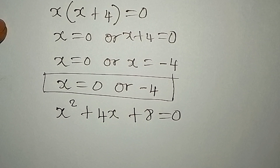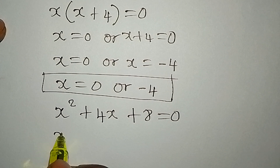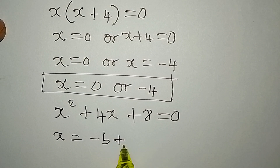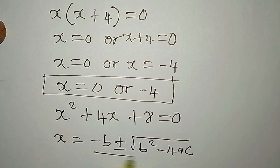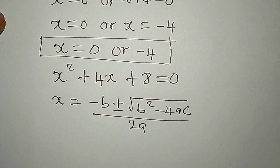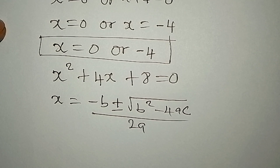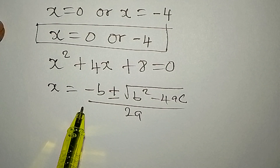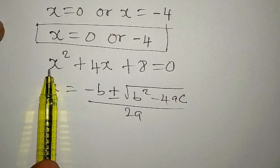To solve this we use the quadratic formula: x equals negative b plus or minus the square root of b squared minus 4ac, all over 2a. This formula is called the quadratic general formula because it can solve every quadratic equation.